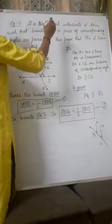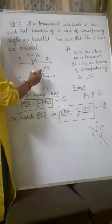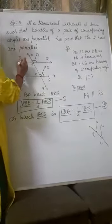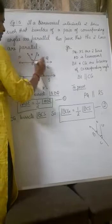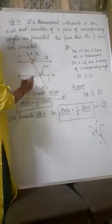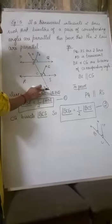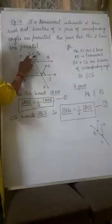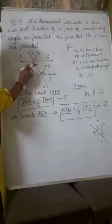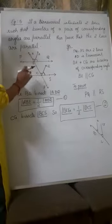The question is given as: a transversal is intersecting two lines. Let us consider the two lines PQ and RS. Let AD be the transversal that intersects these two lines at the points B and C.